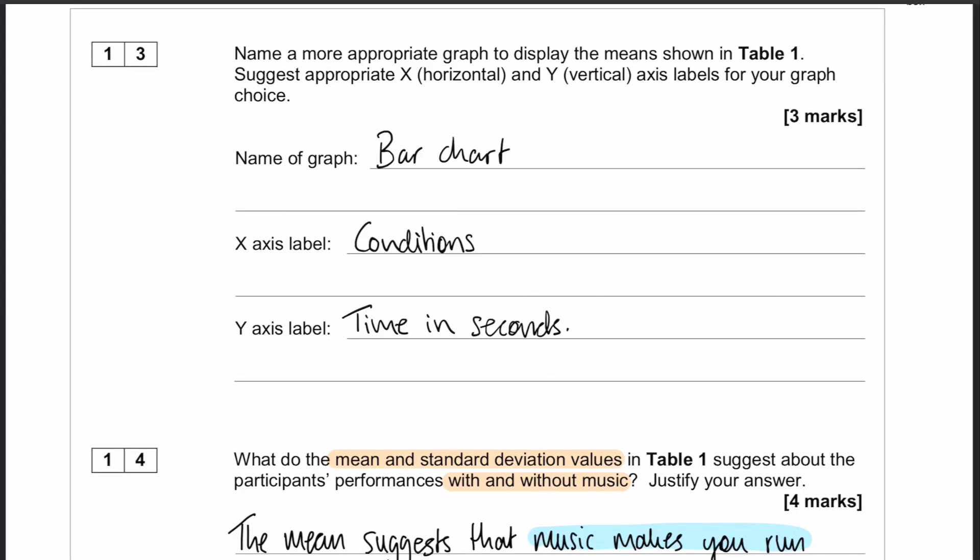So question number 13: it would be more appropriate to use a bar chart, and that's because the data in the table is representing two separate conditions. Therefore, the X-axis label is going to be conditions - running with music and without music. I'll add that in to be fair. And then my Y-axis label is going to be time in seconds, that is my DV.